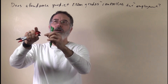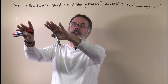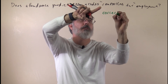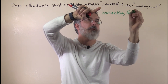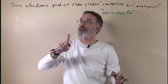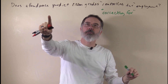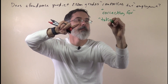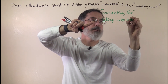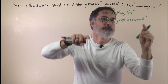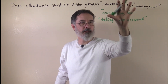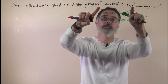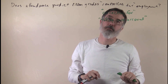You will also see: does attendance predict exam grades correcting for employment? That refers to the same thing. Or: does attendance predict exam grades taking employment into account? These are different terms people use to refer to this exact same thing — what does it mean to control for a variable in multiple regression?